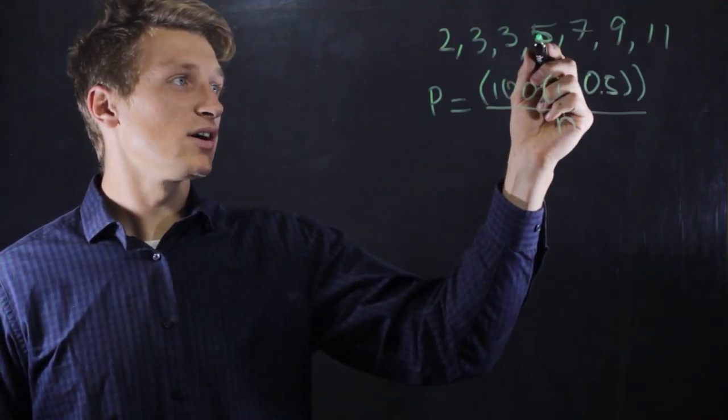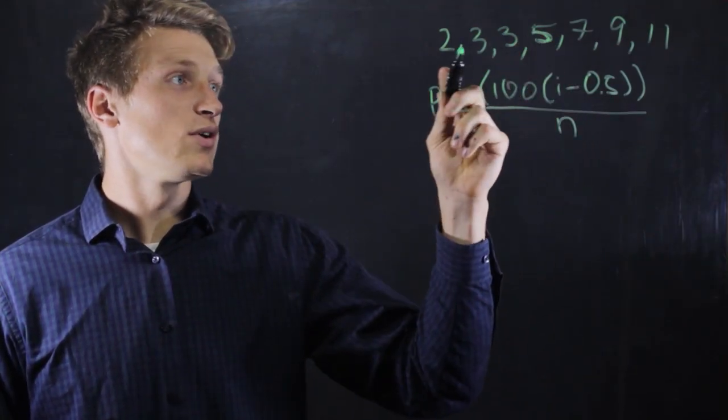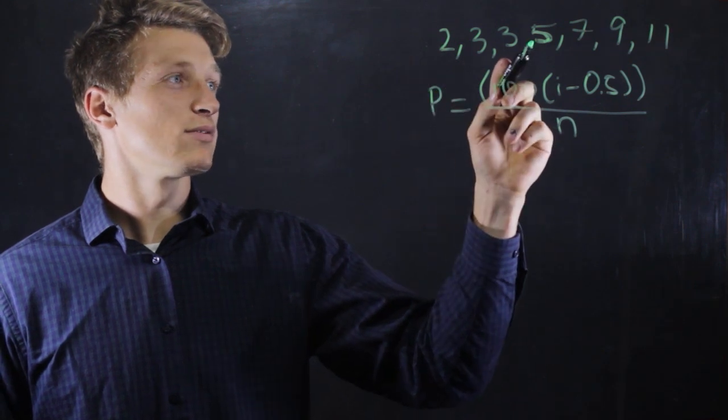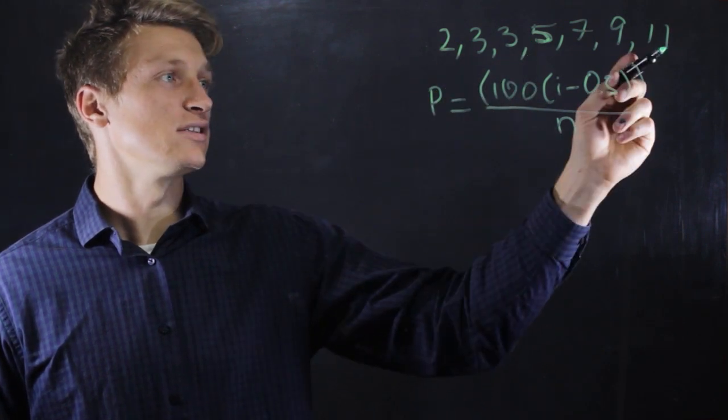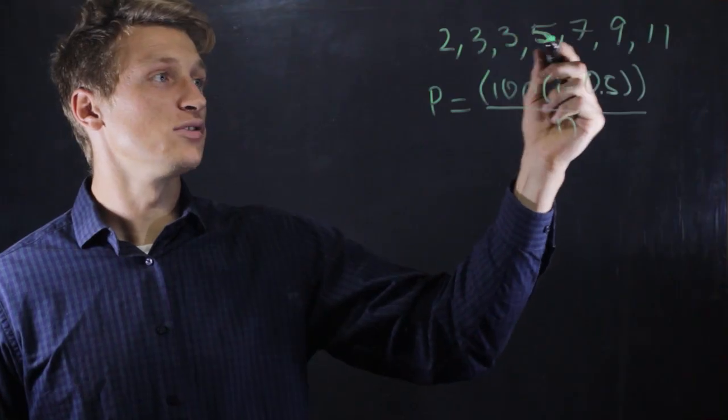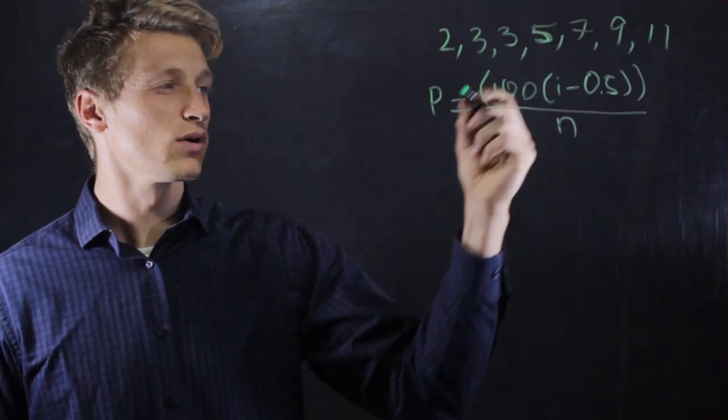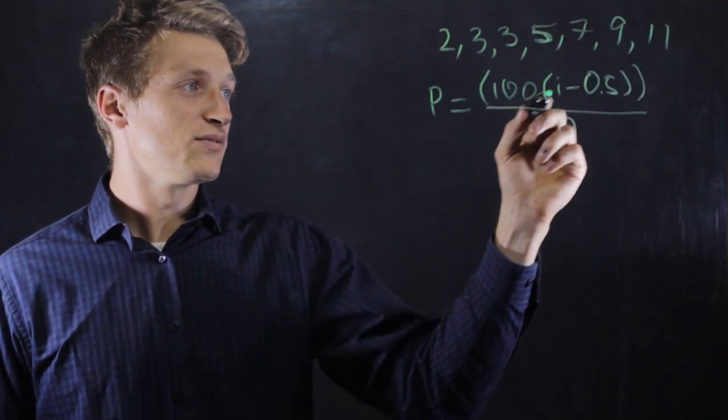So if we want the percentile ranking of this 5, we count this way what rank it holds in the order from least to greatest. So 1, 2, 3, 4, and we plug that in for i.